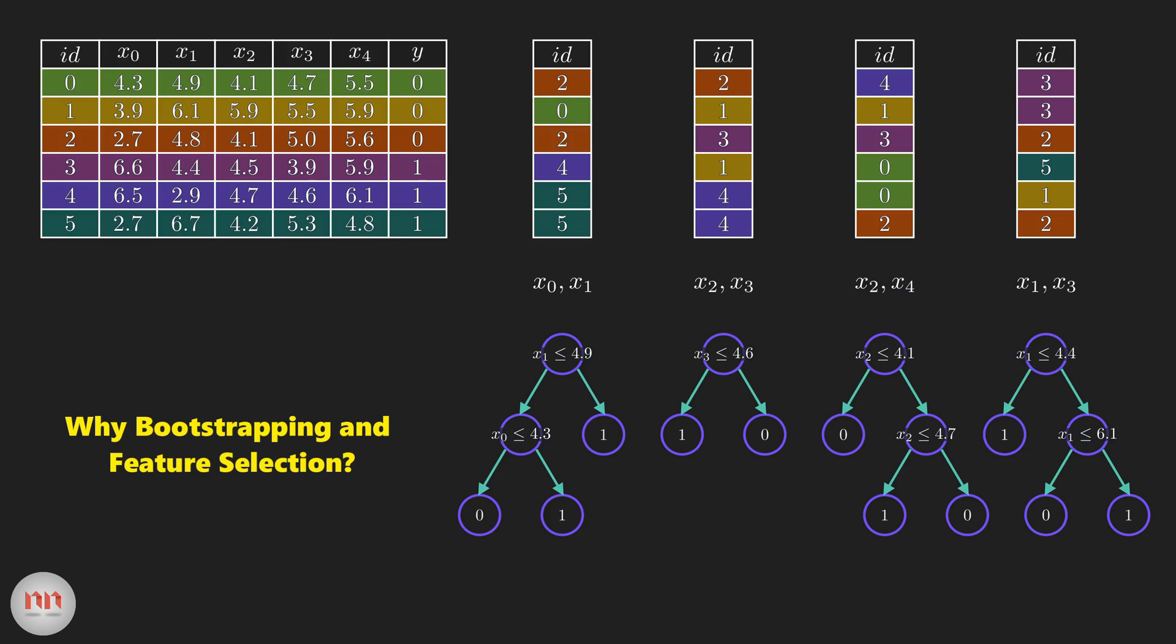But what is the motivation behind bootstrapping and feature selection? Well, bootstrapping ensures that we are not using the same data for every tree. So, in a way, it helps our model to be less sensitive to the original training data. The random feature selection helps to reduce the correlation between the trees. If you use every feature, then most of your trees will have the same decision nodes. And they will act very similarly. That will increase the variance.